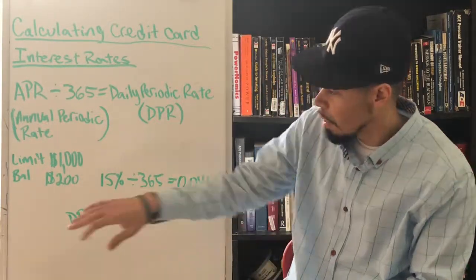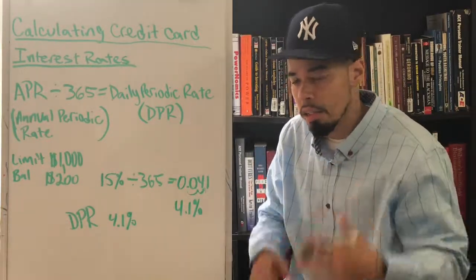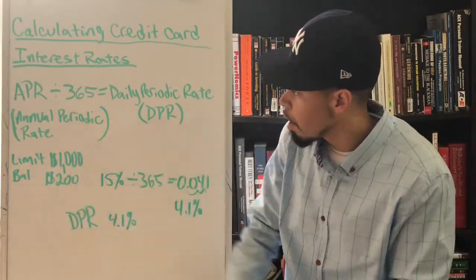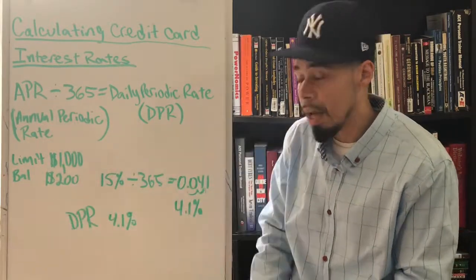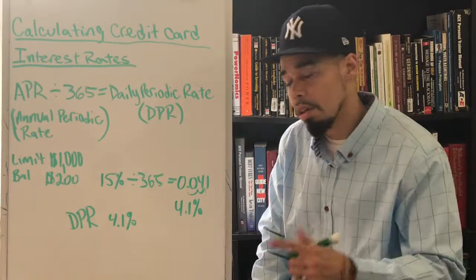Now the DPR is how much interest you're paying daily on the balance. So now let's get into - I'm going to give you an example so you guys can see how this works. You got a credit card and the limit is a thousand dollars and you have a $200 balance. So you owe $200 on the card.